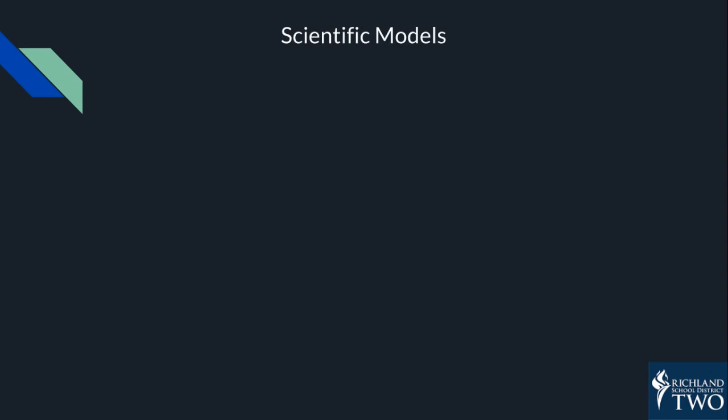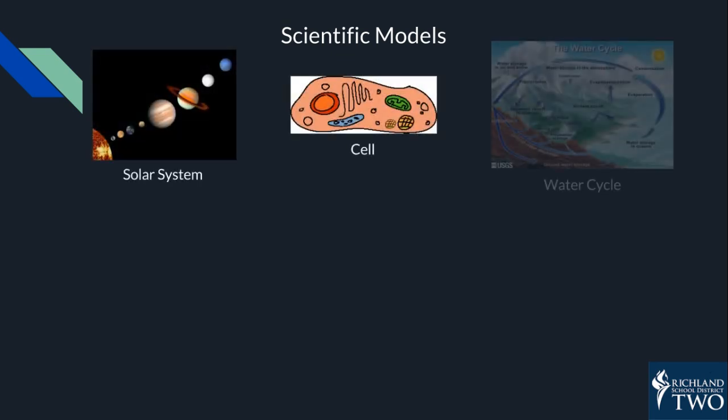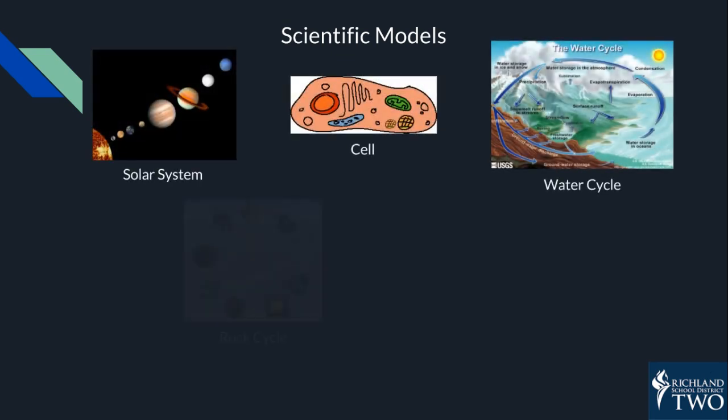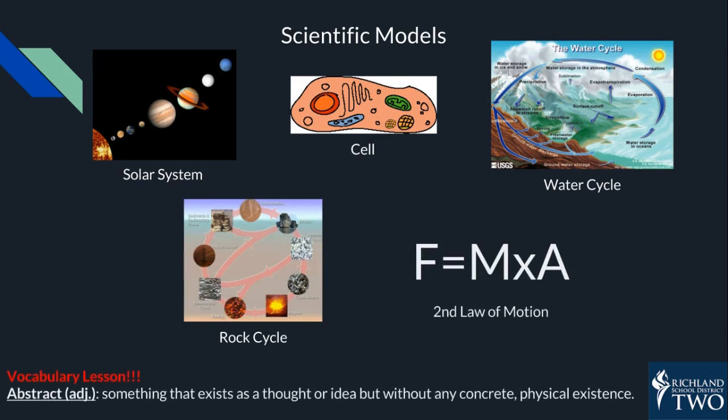So, what is a model, scientifically speaking? A model is something scientists use to represent something else — usually something that is too large, too small, too complex, too complicated, or too abstract to just show or talk about.